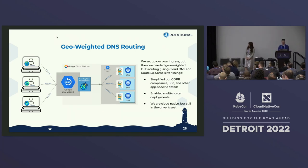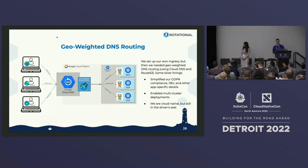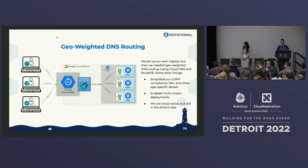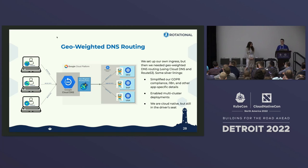Our current solution for geo-weighted DNS routing uses Google Cloud DNS with their geo-weighted routing policy. This gives us a few advantages — we're more cloud-native, but we can still swap out that DNS solution for any other one we come across. At the end of the day, we're running Kubernetes on Google Cloud Engine, so that's also something we could swap out while still maintaining control.